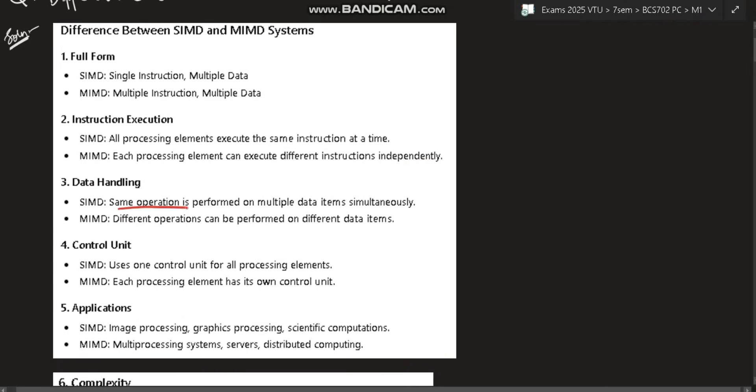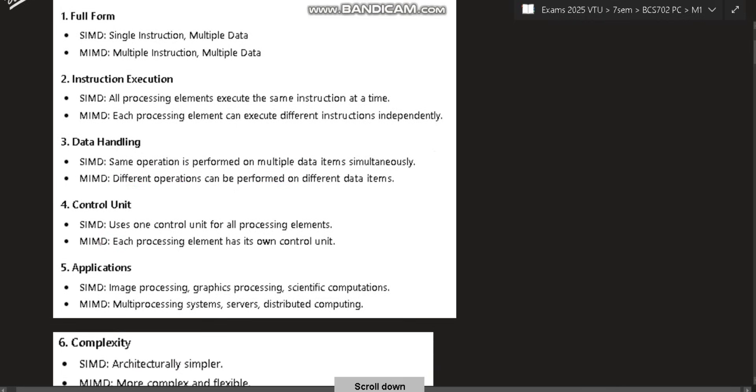In SIMD, all processing elements execute same instruction at a time. In MIMD, each processing element can execute different instructions independently since there are multiple instructions. For data handling, same operation is performed on multiple data items in SIMD, and in MIMD different operations can be performed on different data items. For control unit, one control unit is for all processing elements in SIMD, and in MIMD each processing element has its own control unit.